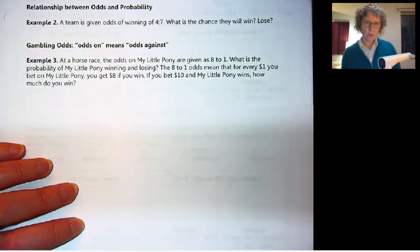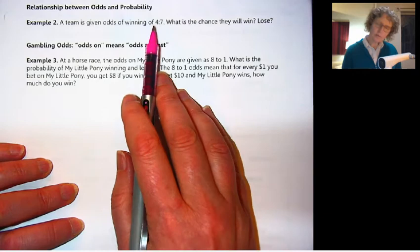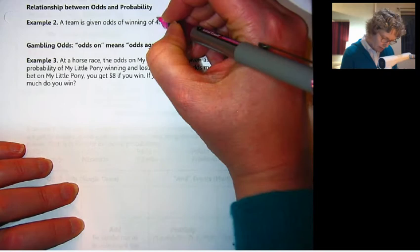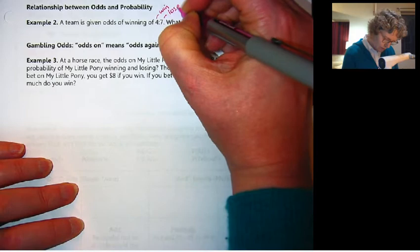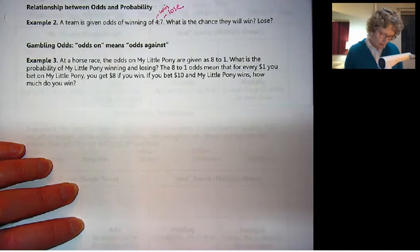But odds is different. Odds of winning of four to seven, that doesn't mean four out of seven. What this means is four chances that they will win versus seven chances that they will lose. So four to seven ratio. So odds of winning four to seven.